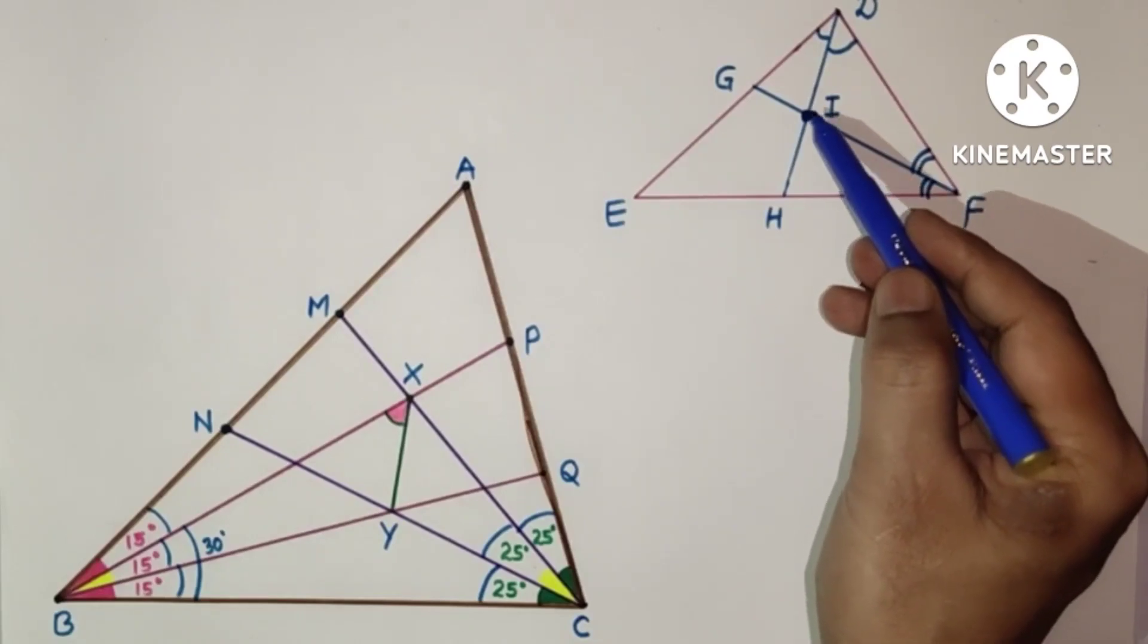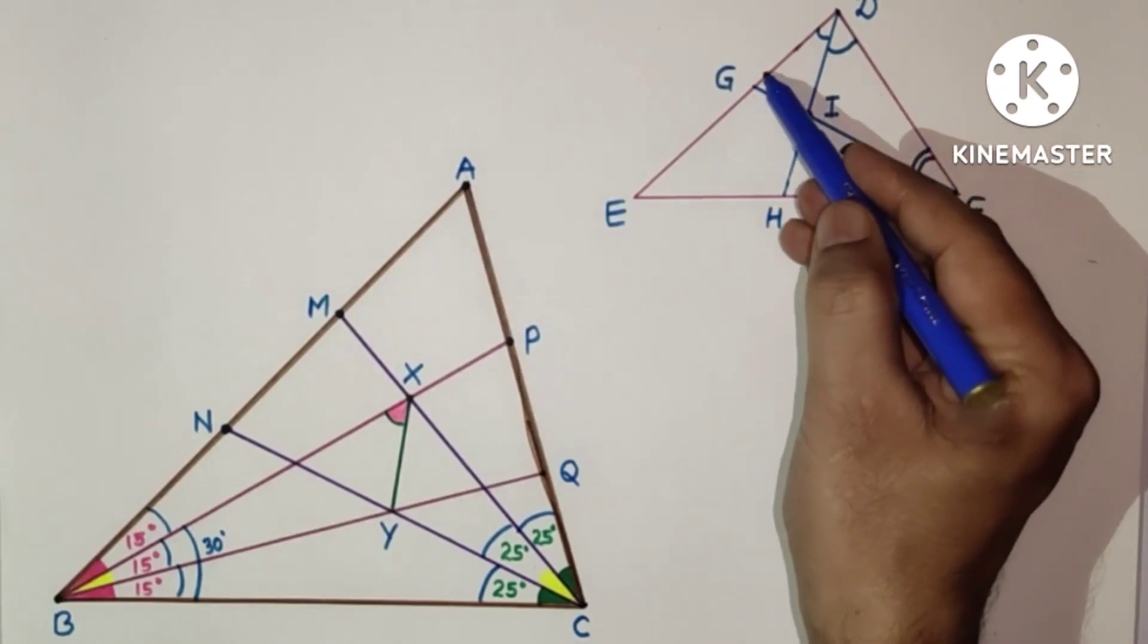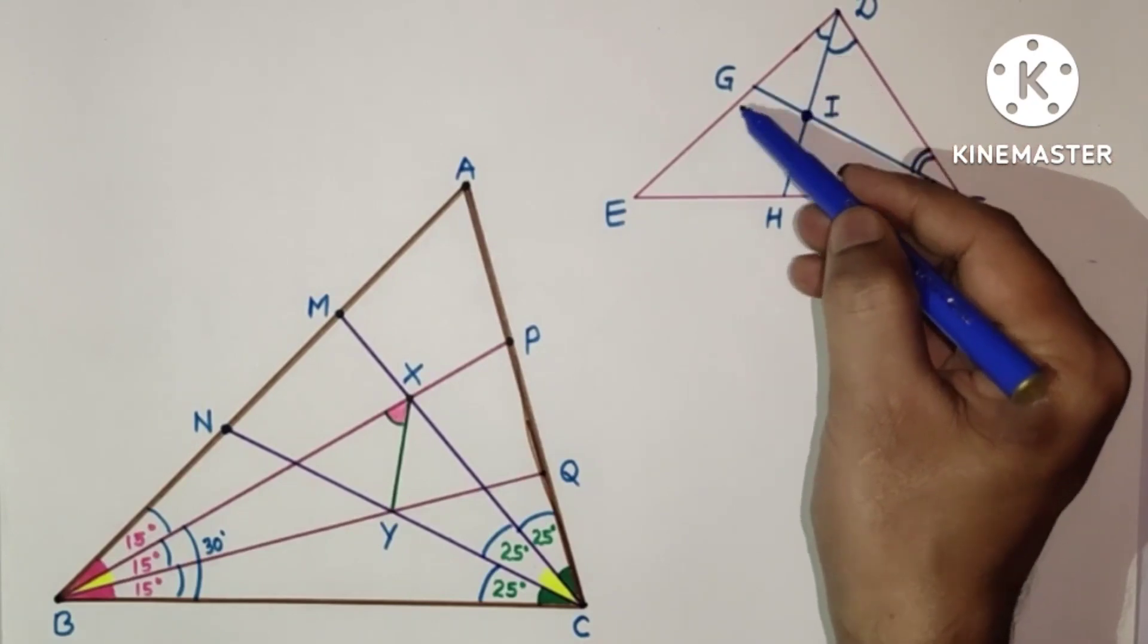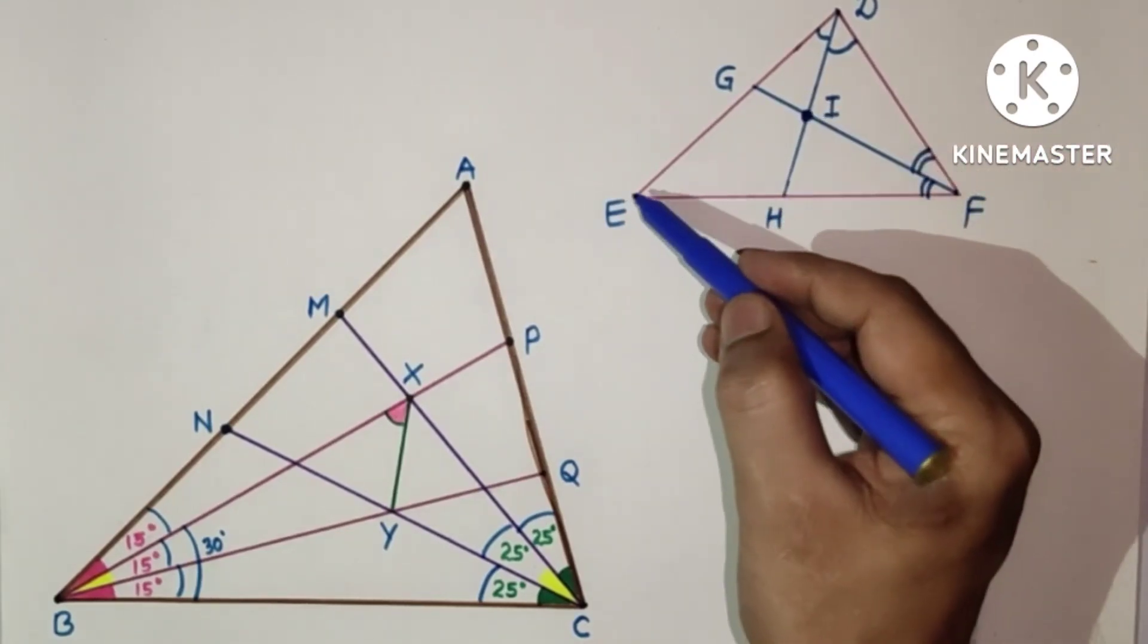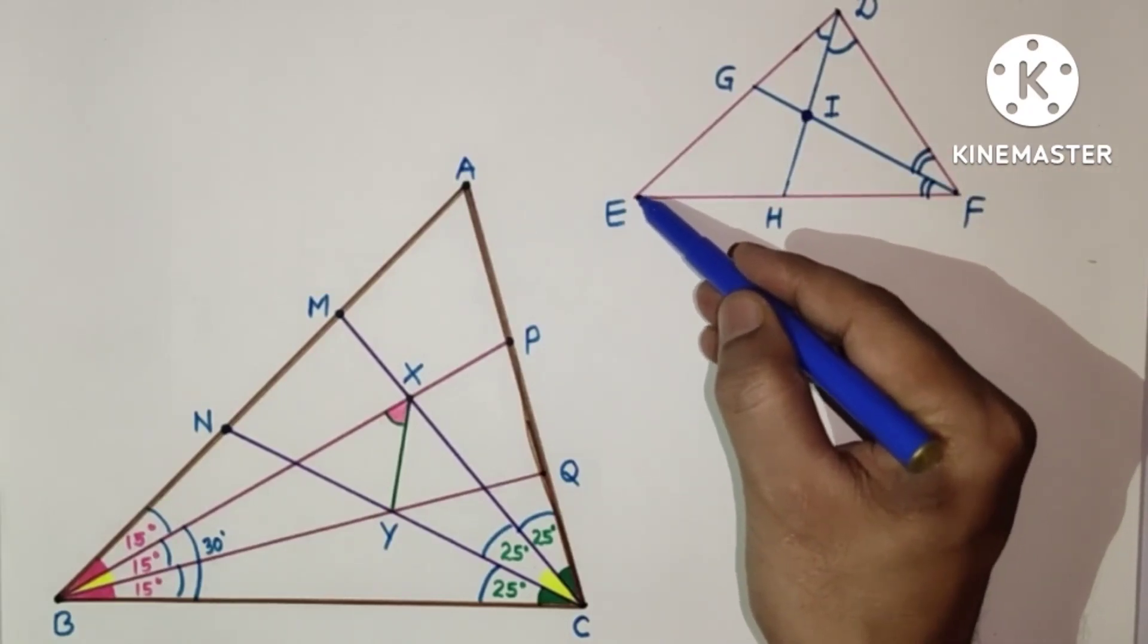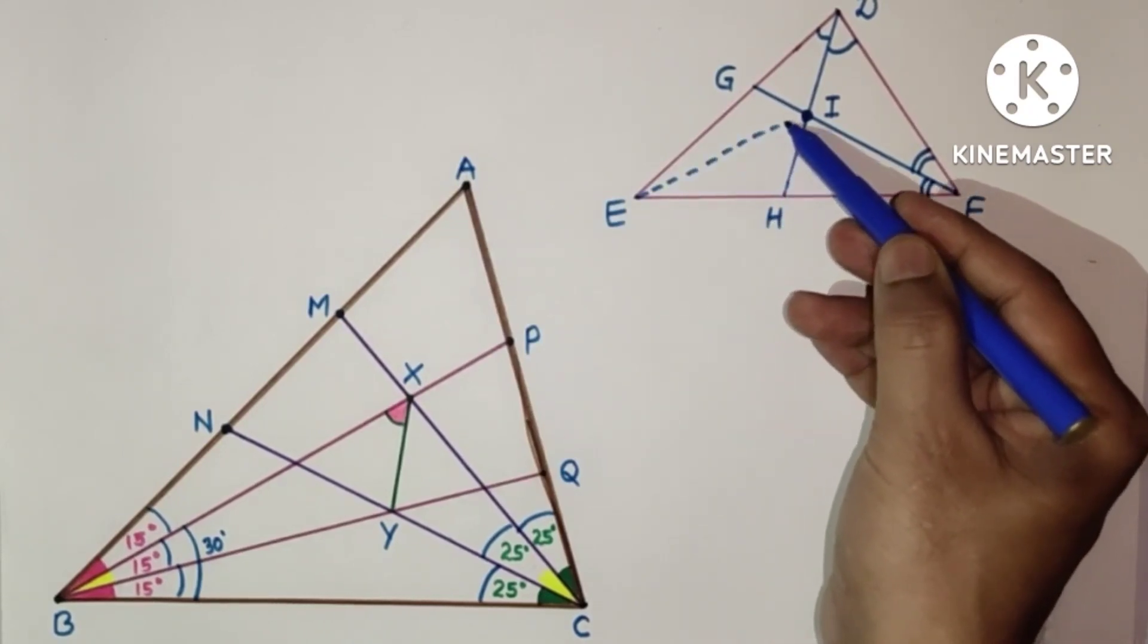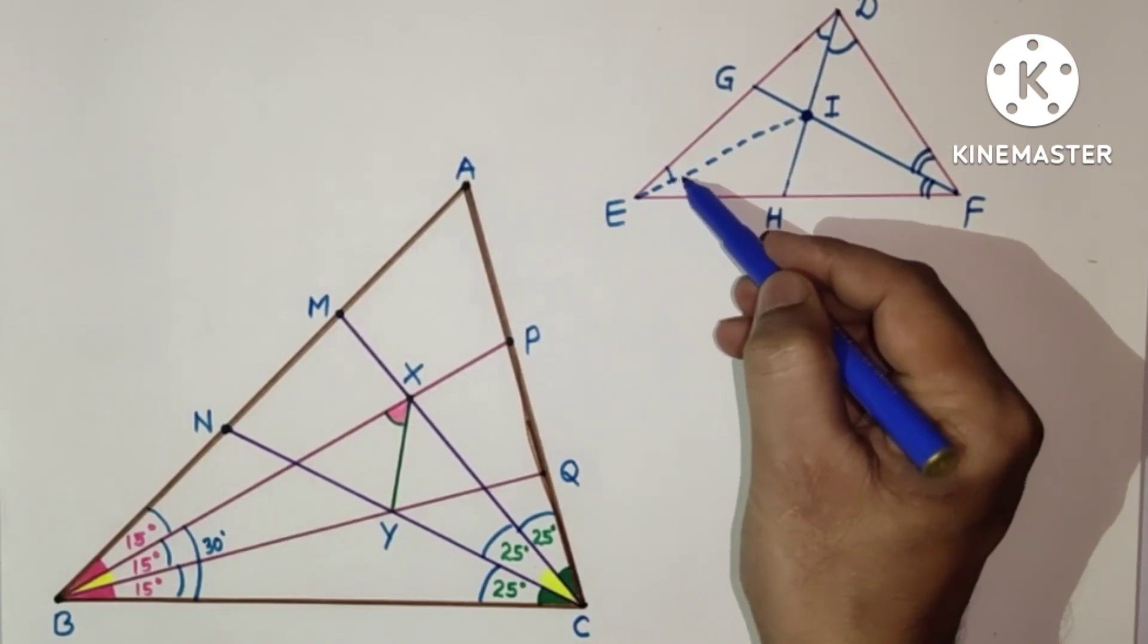And if from this point we draw a circle, that circle will be incircle and that circle touches all three sides. Now if we join EI, then EI will also be angle bisector of this. This is the concept used in this question.